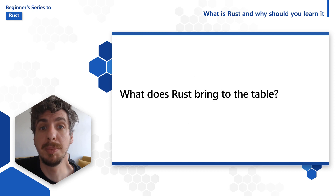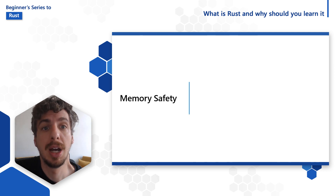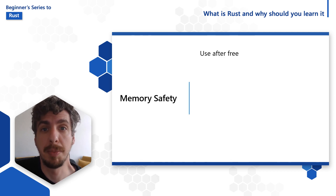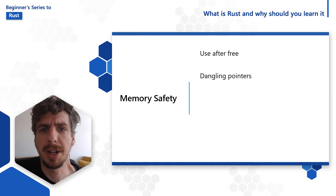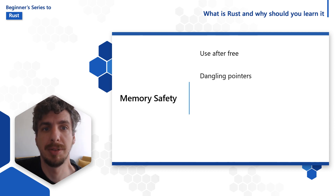So if C and C++ already give programmers the control they need when writing such low-level programs, what does Rust bring that's new? Unlike C and C++, which do not guarantee that memory is used properly, Rust by default guarantees 100% memory safety. This means hard to debug issues that occur in C and C++, like use after free and dangling pointers, are simply not possible in Rust.